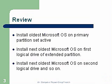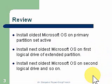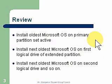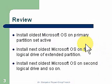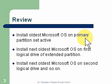In review, we're going to install our oldest Microsoft OS on our primary partition and set it active. If you don't set it active, it won't boot. You set it active using those partition utilities. We're going to install the next oldest operating system on the first logical drive, which will be in our extended partition. Then we're going to install the next oldest Microsoft OS on our second logical drive, and so forth. Now, if you're just installing Windows NT operating systems, you could just use primary drives — you can install a maximum of four primary drives on a computer. But with DOS, I can't use more than one primary partition, since DOS only operates with one primary partition. In my extended partition, I can create as many logical drives as I need for as many operating systems as I want.